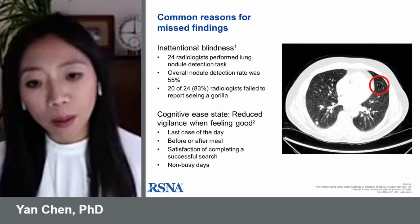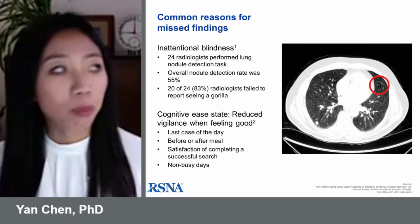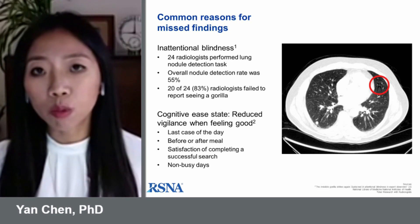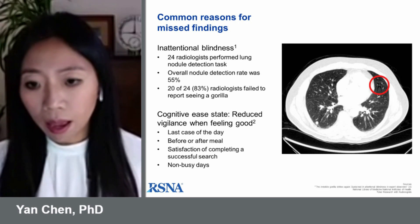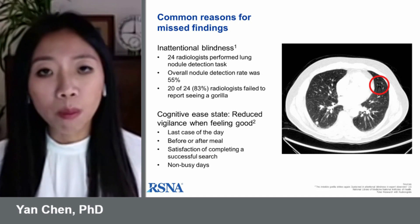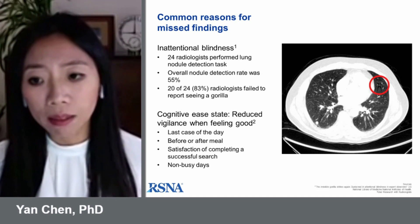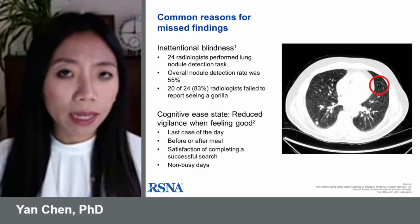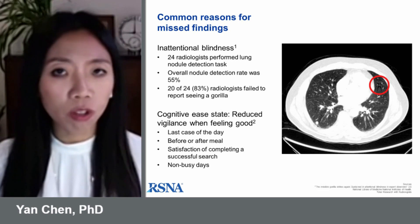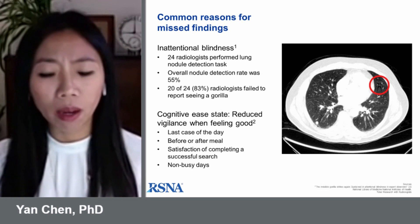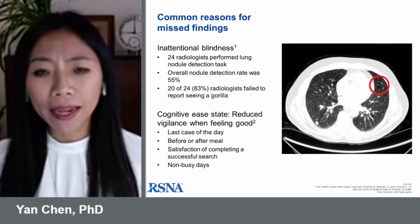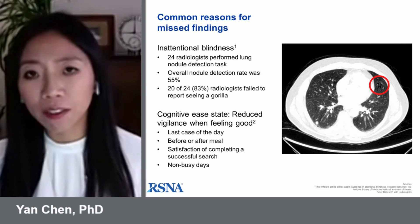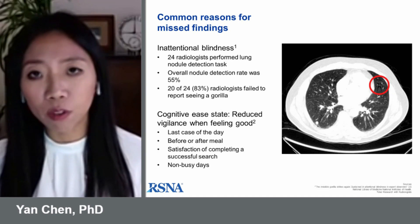Another example is from breast screening in the UK. A radiologist will read images all week and may expect to see one or two cancers. So if they already find one or two cancers on a Monday morning, are they more likely to make false negative mistakes for the rest of the week?